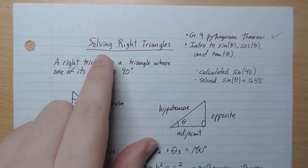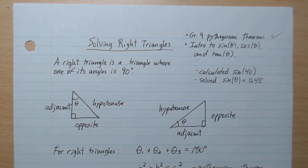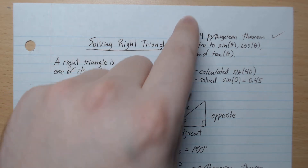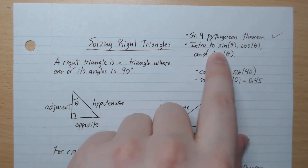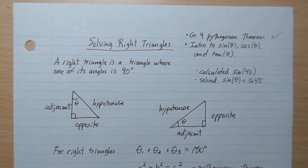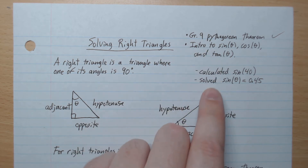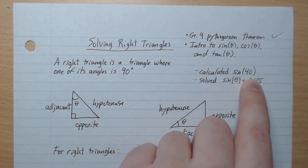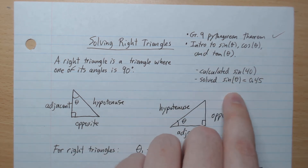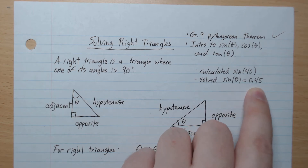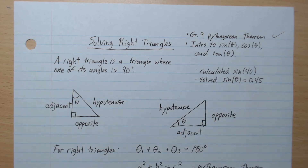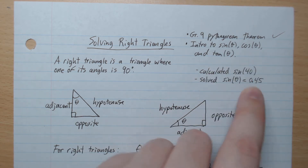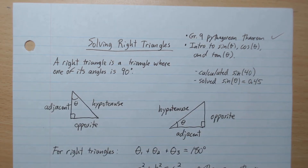Hey everyone, welcome back. Today we're going to look at solving right triangles. If you've completed the previous videos here — Grade 9 Pythagorean Theorem and the Grade 10 Intro to Sine Cos Tan video — then today's lesson will be a lot easier for you. In that previous video, we practiced calculating sine of 40, for example, and also solving sine of theta equals 0.45 using the inverse sine, cos and tan. So if you haven't practiced this, I highly recommend that you go back to the previous video and complete it.